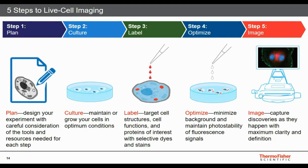Concentration is one key parameter requiring optimization. We spend a lot of time on this during product development, but we can't do it for every cell type, so it sometimes needs to be performed on a cell-type-specific basis. We provide general guidelines on concentrations and dilutions as starting points before moving into step four and discussing other parameters for optimization during live cell imaging.